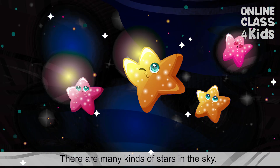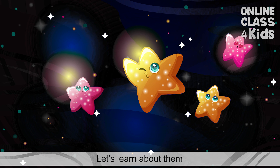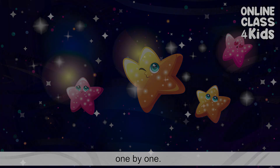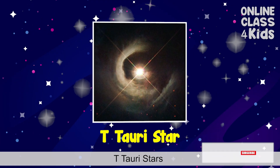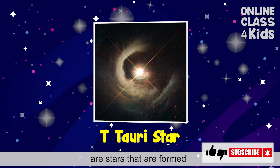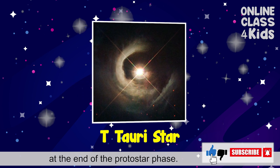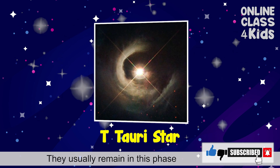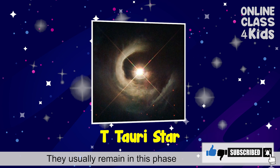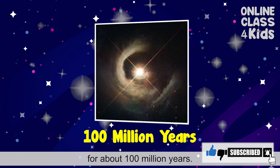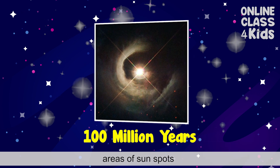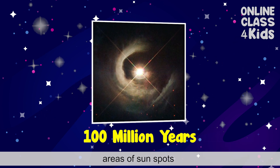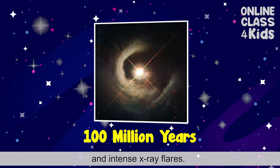There are many kinds of stars in the sky. Let's learn about them one by one. This is a T-Tauri star. T-Tauri stars are stars that are formed at the end of a protostar phase. They usually remain in that phase for about a hundred million years and can have large areas of sunspots and intense x-ray flares.